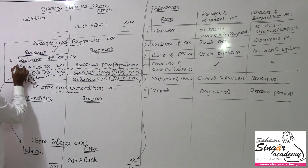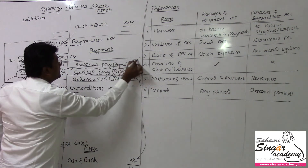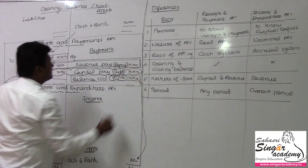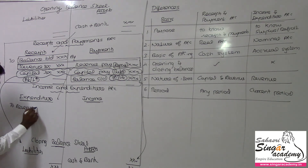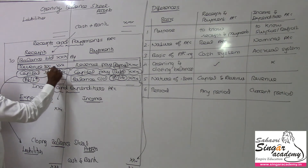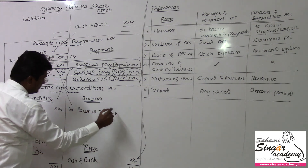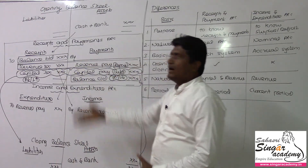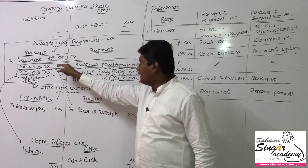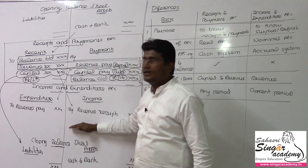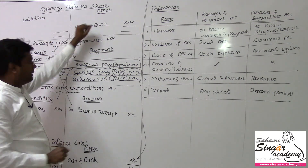This is the income and expenditure account. Revenue payments will come on the expenditure side. Revenue receipts will come on the income side. So after the receipts and payment account, we have three parts: one — balances; two — capital receipts and payments; three — revenue receipts and payments. The third block — revenue receipts and payments — will come into the income and expenditure account.